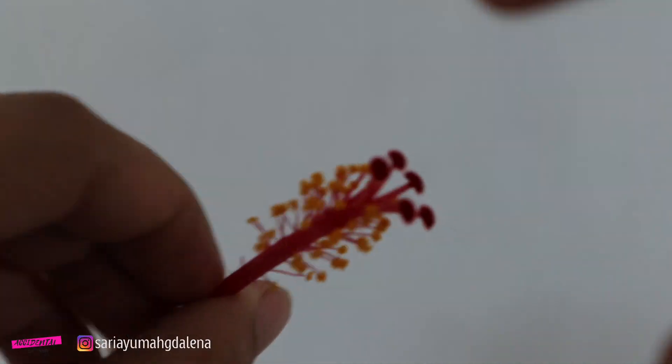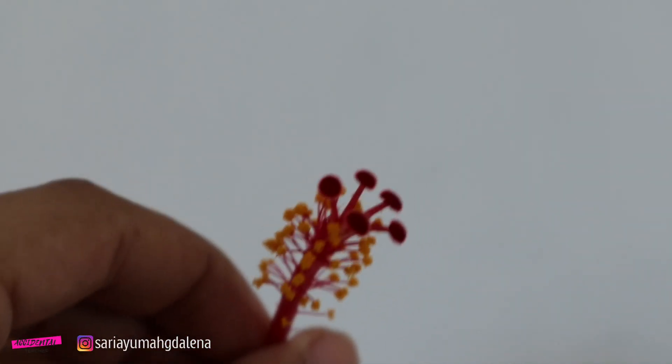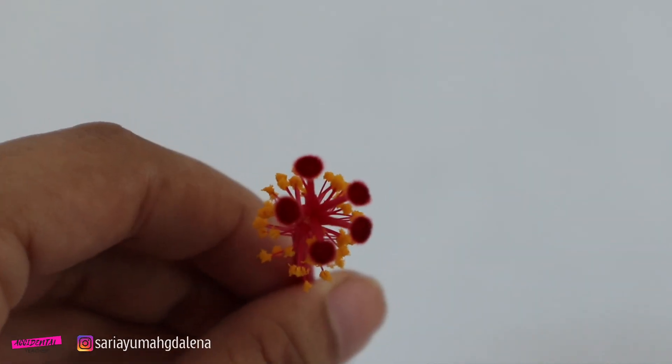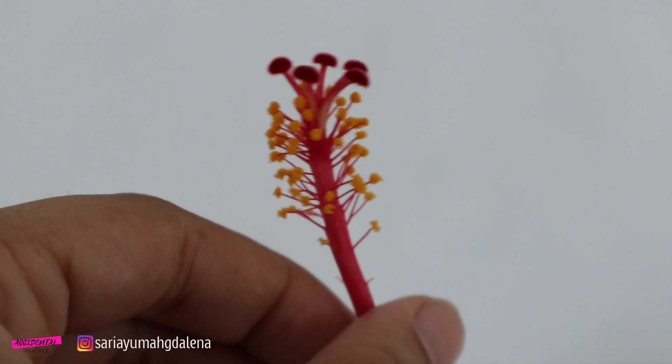This reddish part on top is the stigma. It is commonly seen in the center of the flower. It is covered in a sticky substance to allow pollen grains to stick to them.